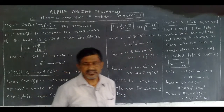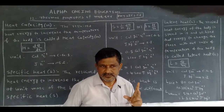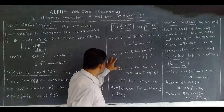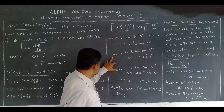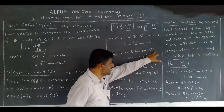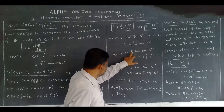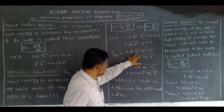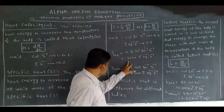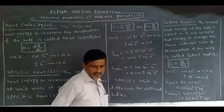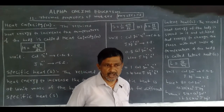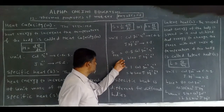For ice, the specific heat value is 0.5 calorie, gram inverse, centigrade inverse in CGS system. In SI system, it is 2100 Joule, kg inverse, Kelvin inverse.